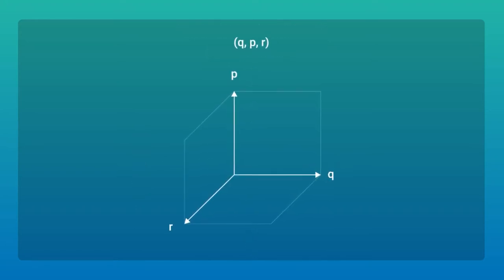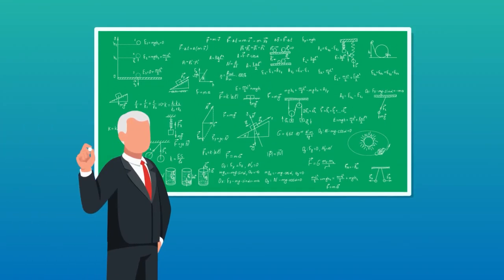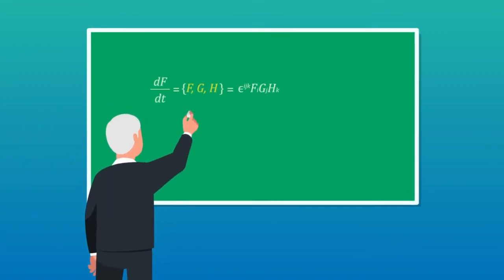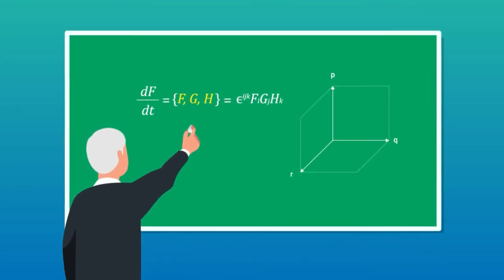But can the formalism be generalized for a higher dimensional phase space? The physicist Yoichiro Nambu proposed such a formalism for a three-dimensional phase space with Nambu brackets replacing the Poisson bracket.